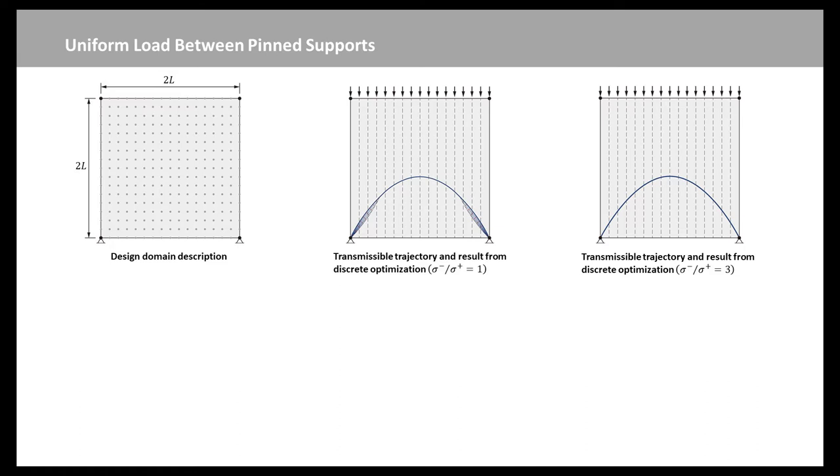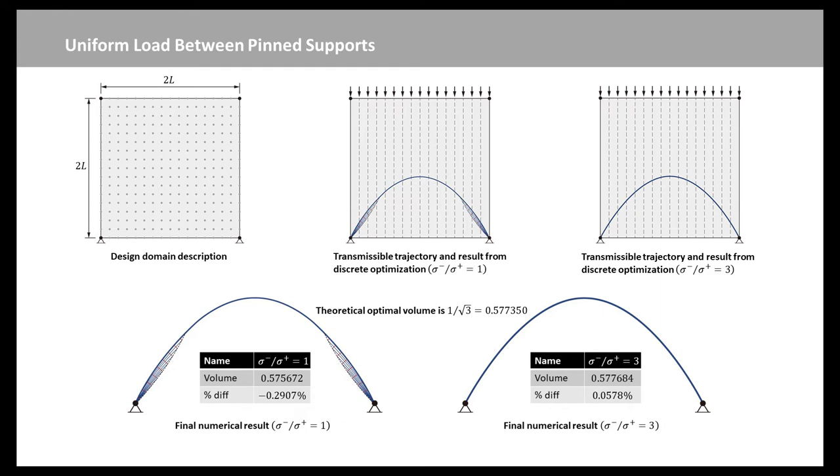Sum of the vertical loads is 1, and a 200 times 200 grid is used for discrete optimization. But for visual clarity, only a series of nodes is shown in this slide. When the ratio between compressive and tensile stress capacity is larger than 3, for example sigma minus over sigma plus equal to 3, the optimal form is a funicular R structure.